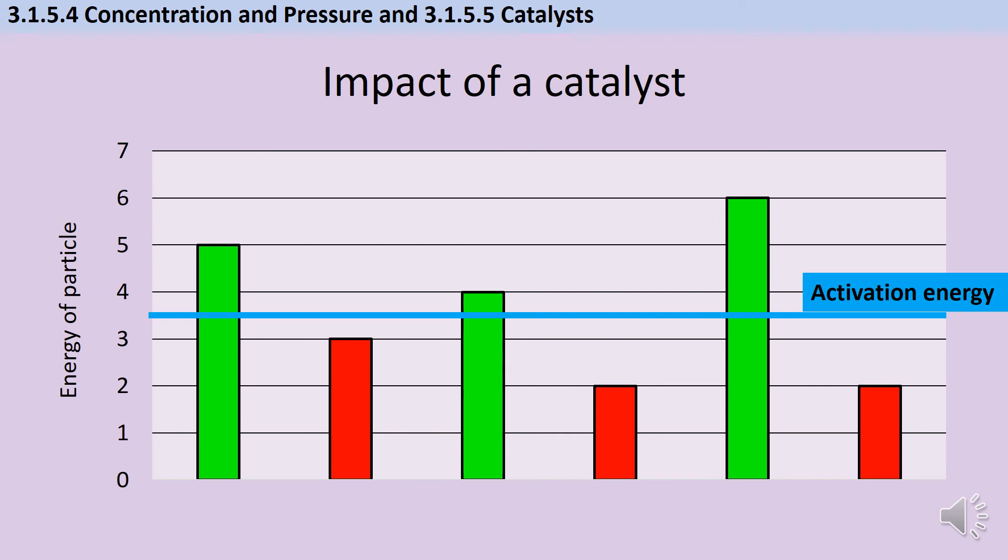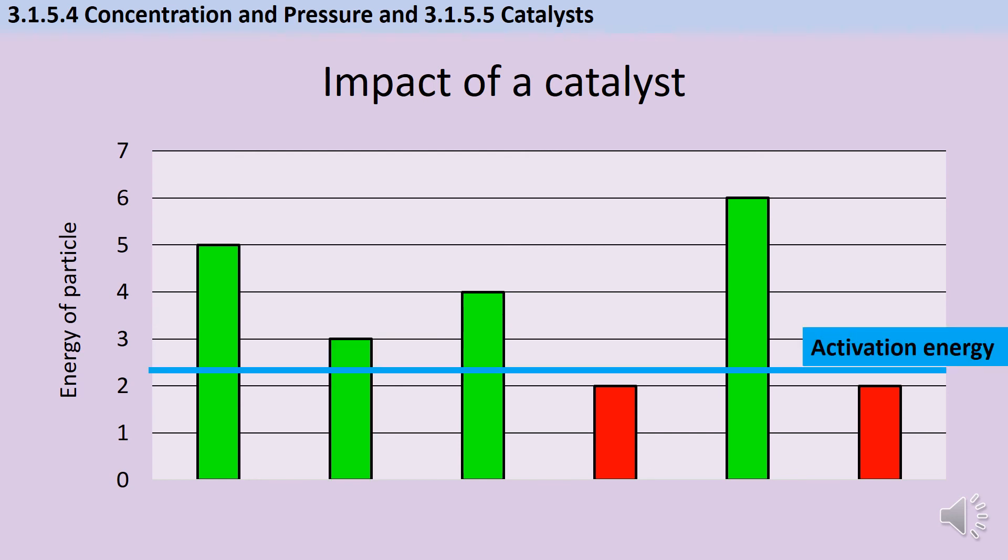When we add a catalyst, we don't change the amount of energy that the particles have, what we do is lower the entry requirement. Now that the activation energy is lower, because we're employing an alternative pathway, four of my particles can react, rather than just three.